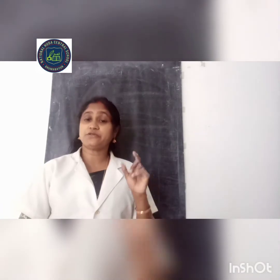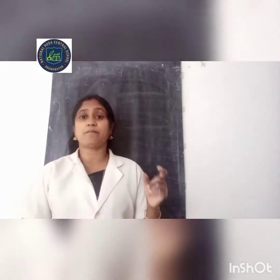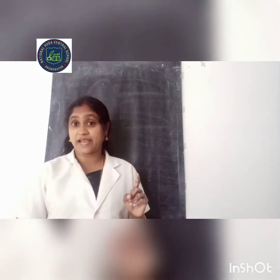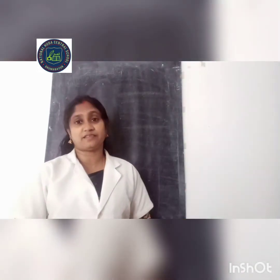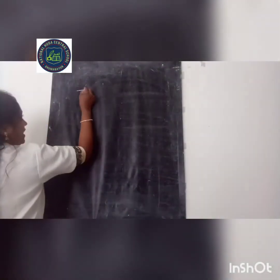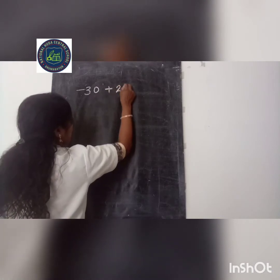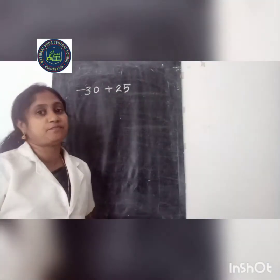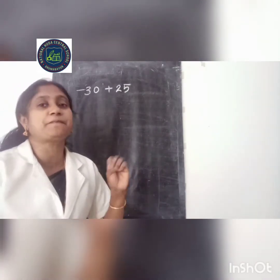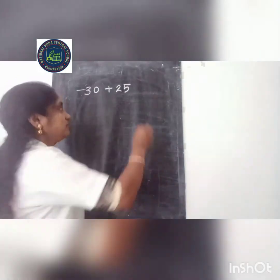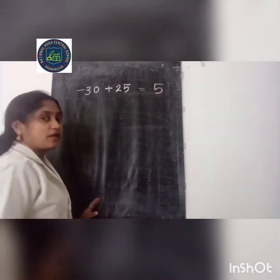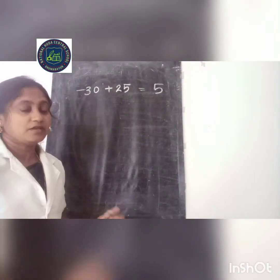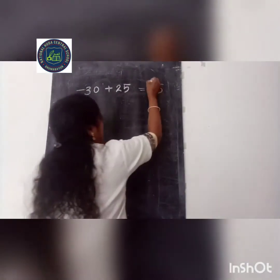Now the third rule: if we add 2 numbers with different signs, we first subtract the smallest number from the highest one, then give the sign of the greatest number. For example, minus 30 plus 25 — 30 is negative and 25 is positive. We subtract: 30 minus 25 equals 5. The greatest number is 30, its sign is negative, so the answer is negative 5.